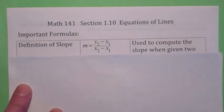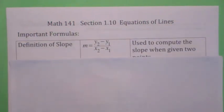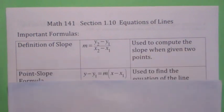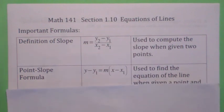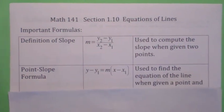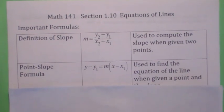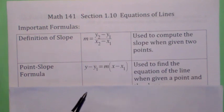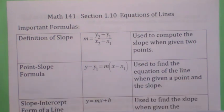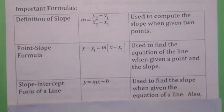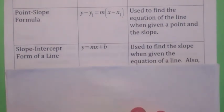There are some formulas you need to know. The definition of slope is used whenever you want to compute the slope if you're given two points — very important. There's the point-slope formula, used if you are given a point and the slope and you want to find the equation of a line. And then there's the slope-intercept form of a line: y equals mx plus b.